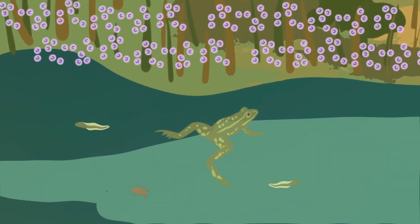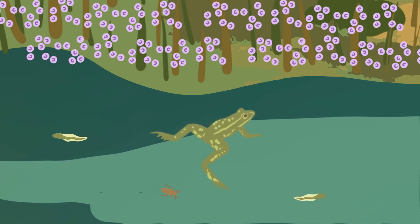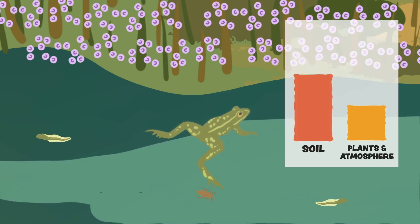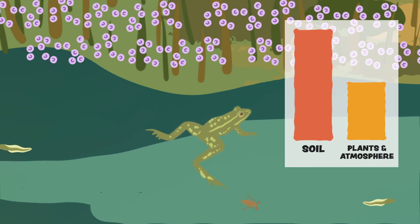For millions of years, our soil has been storing carbon. Now there is more carbon in the soil than in the plants on Earth and the atmosphere combined.